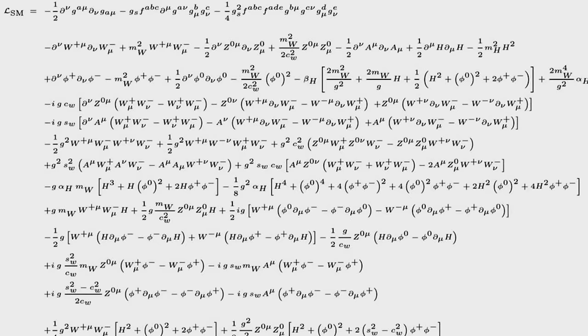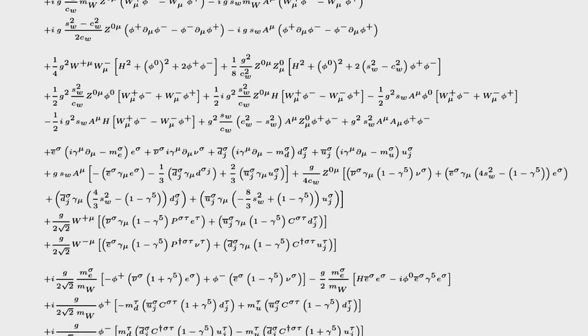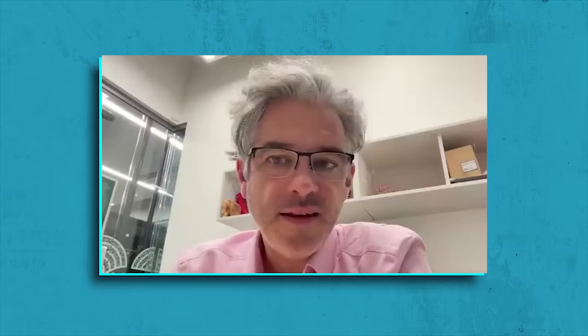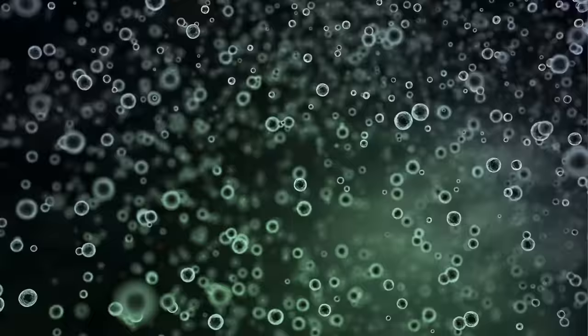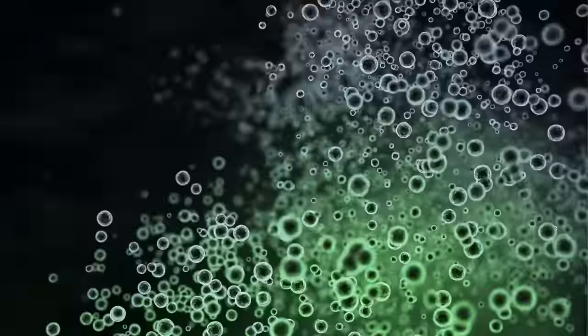This slightly daunting-looking equation is the standard model. It predicts everything that we know about the laws of the universe, but it does not contain an explanation for why this complexity emerges. At least that's what Sarah Walker and Lee Cronin, lead authors of assembly theory, suggest. Assembly theory is meant merely to help us, at the very basic level, determine if an object has been produced by the process of selection and evolution.